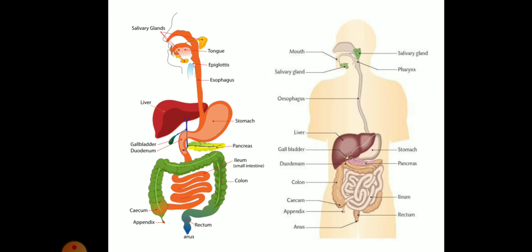When we are very hungry and our favorite dish comes in front of us, or if we are just thinking about it, our mouth starts to water. This is nothing but the secretion of the salivary glands, which helps in the digestion of carbohydrates right in the mouth. So the digestion process starts in the mouth itself. The tongue is also very helpful because it mixes the saliva into the food.